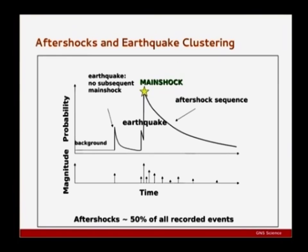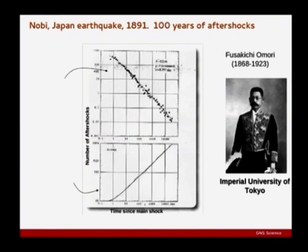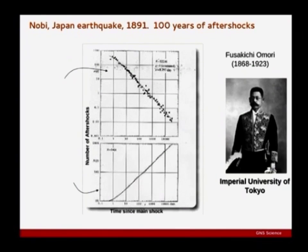There's no true definition of what an aftershock is, and that causes difficulty in communications. Roughly half the events in the catalog could be called aftershocks. This idea of how aftershocks work is the oldest law in seismology, first coming out in 1891 by Omori in Japan. His plot of an aftershock sequence beginning in Nobi in 1891 shows 100 years of recorded aftershocks, demonstrating a power-law decay in the rate of aftershocks — which is really what the Omori law describes.